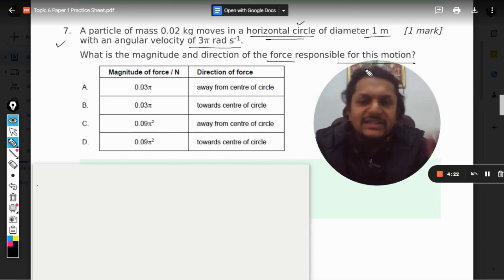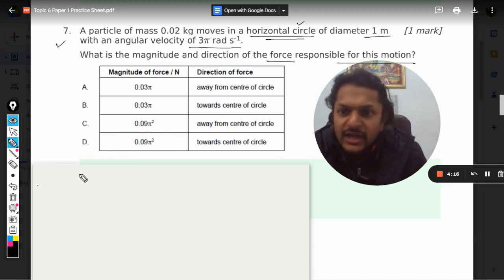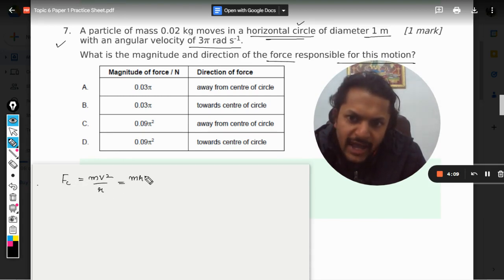So what is the force that is responsible for this circular motion? First of all, it is known as centripetal force. And the magnitude for the centripetal force is given by mv square by r, or mr omega square.